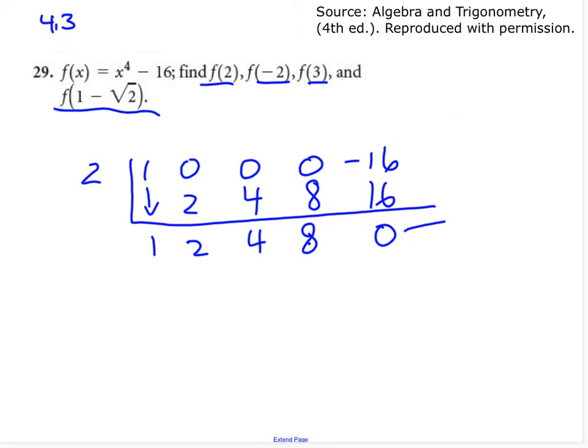And so if I get a 0 here, it means the remainder is 0, but it also says f of 2 is a 0,